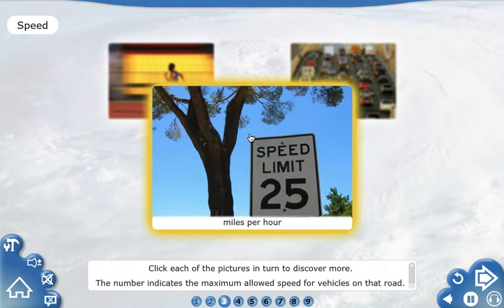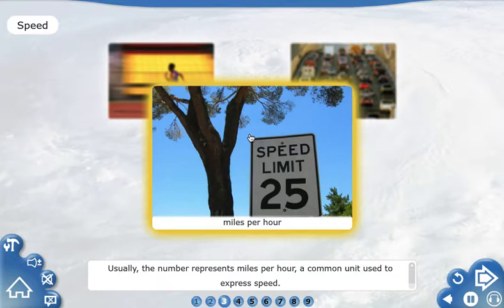The number indicates the maximum allowed speed for vehicles on that road. Usually, the number represents miles per hour, a common unit used to express speed.